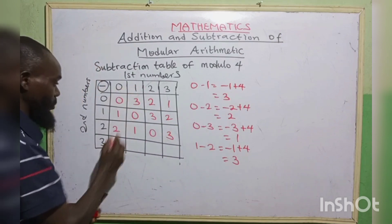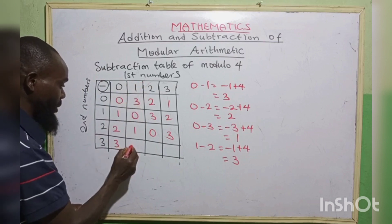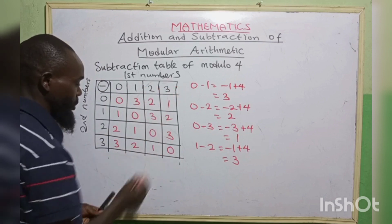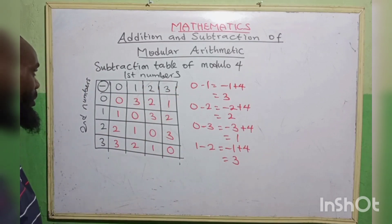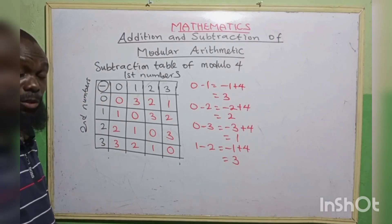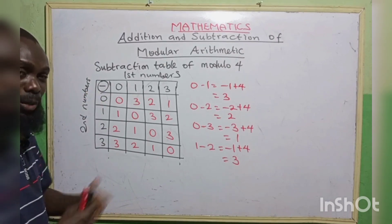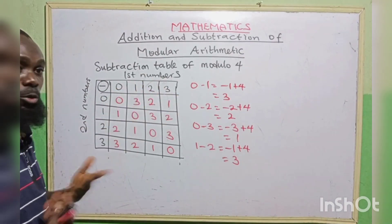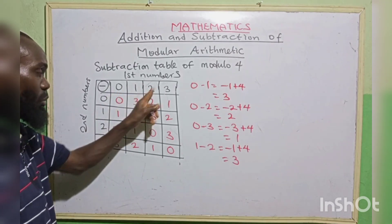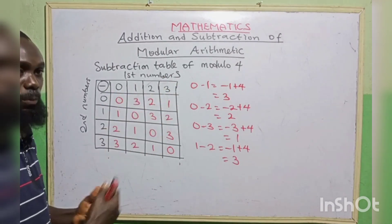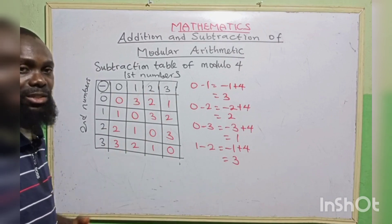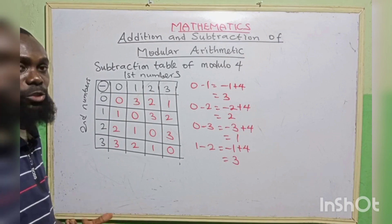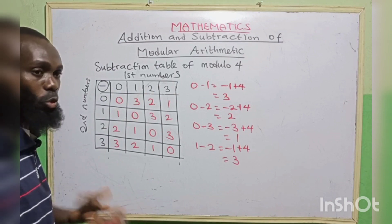3 minus 0 is 3. 3 minus 1 is 2. 3 minus 2 is 1. 3 minus 3 is 0. This is how to perform the subtraction operation of modulo 4. You can also apply this to modulo 5, using 0, 1, 2, 3, 4, or modulo 6 using 0 through 5. The table always stops at a number one less than the modulo — modulo 7 stops at 6, modulo 8 stops at 7.